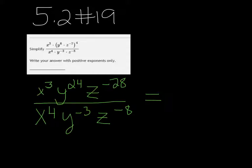So if we look at the x's, 3 minus 4 is a negative 1, so we want to go ahead and put x to the first, or just plain old x, in the denominator.